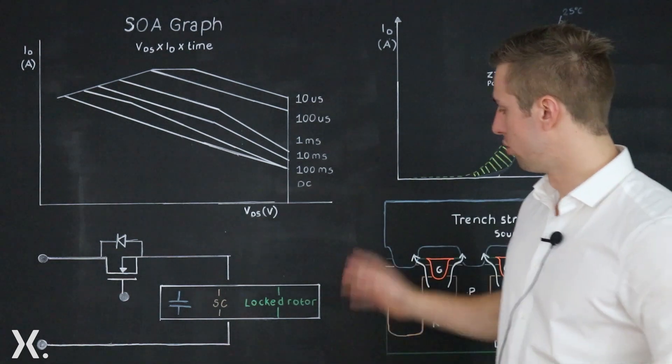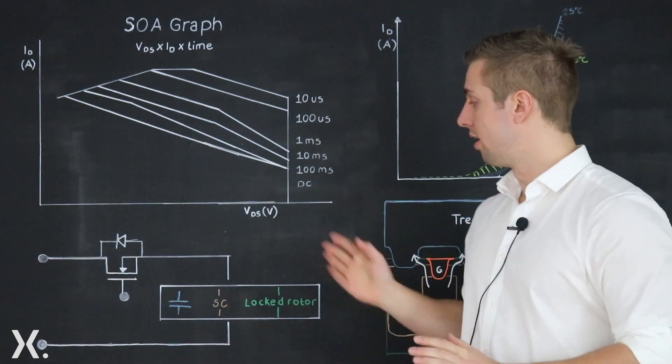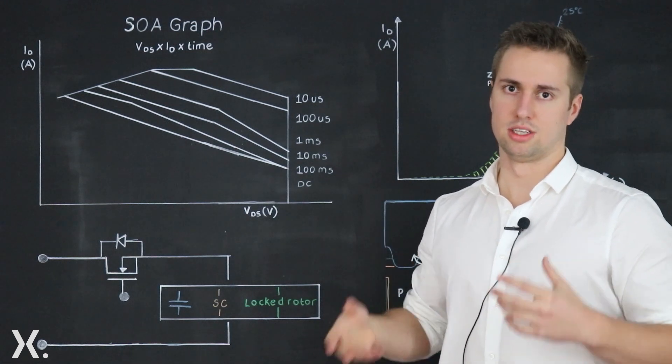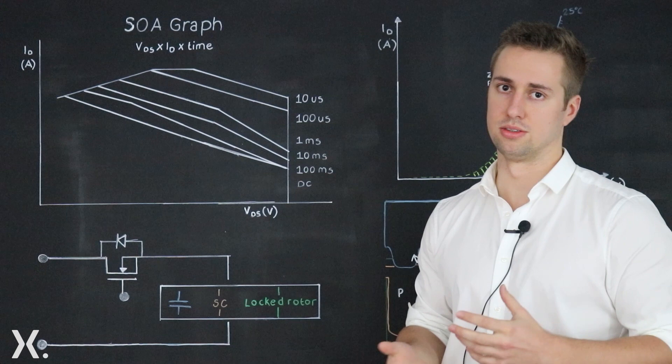Now the last example would be a motor drive circuit. Here if the rotor locks depending on the designer's solution the device would have to switch that current.